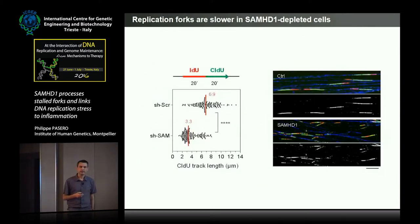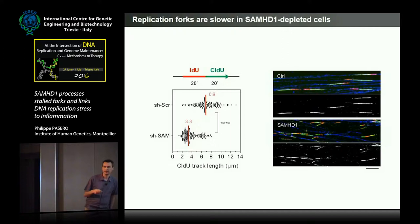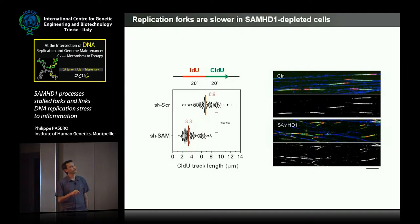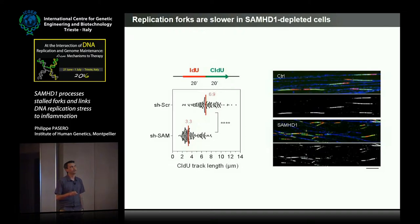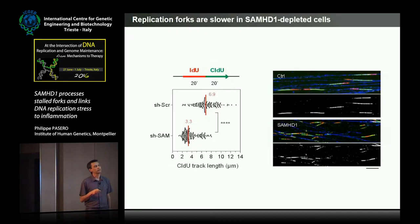We looked directly at the progression of replication forks using the DNA fiber assay. We pulsed cells with IdU and then CldU, and measured the length of the CldU tracks as an indication of the distance covered by the forks. We found that in the absence of SAMHD1, this distance was actually much, much shorter, indicating that SAMHD1 is required for normal fork progression.